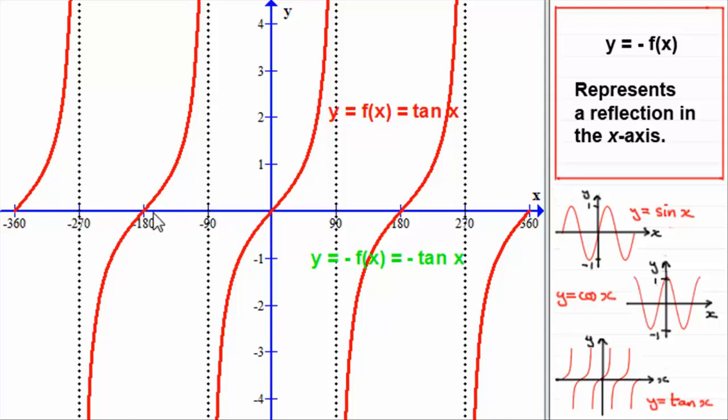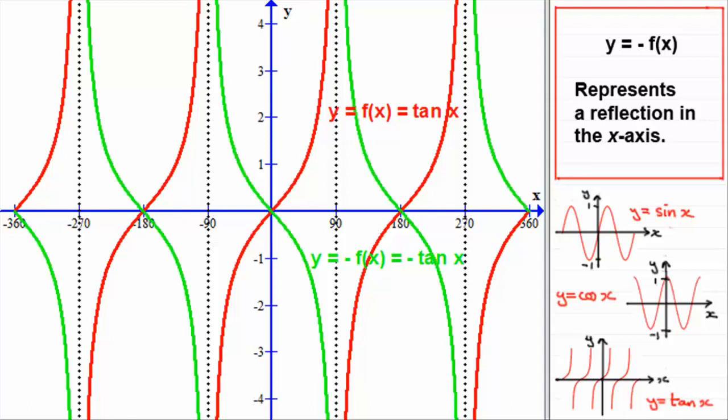We've got to reflect this graph then in the x-axis. So remember, all these points on the x-axis stay invariant. Points up here go down to here, and points down here get mirrored up to here. And what you should have would be something like that.